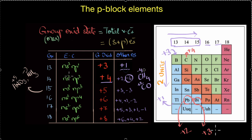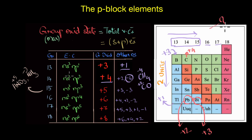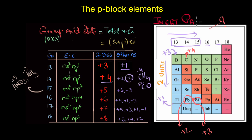So why are the heavier members more stable in a lower oxidation state unlike the lighter members? This can be attributed to something called the inert pair effect, which mainly results due to the poor shielding effect of d and f orbitals. We'll learn more about that in the next video.